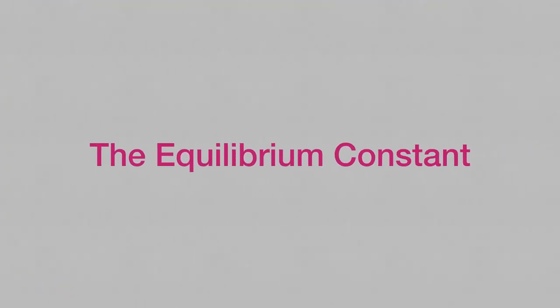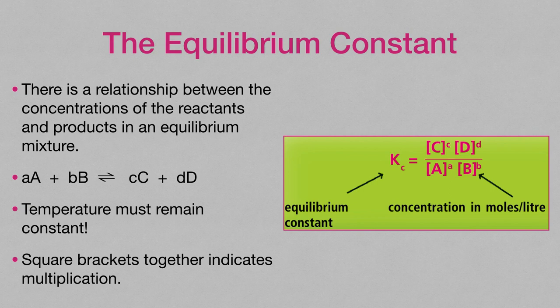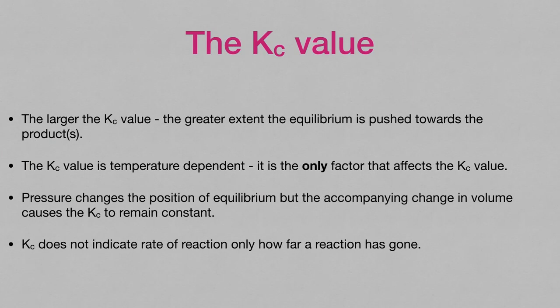The equilibrium constant. The equilibrium constant describes mathematically the relationship between the concentrations of the reactants and the products in the equilibrium mixture. The Kc looks more difficult than it is — pay attention to the formula and you do need to learn it. A large Kc value means the equilibrium will be closer to the product side, so chemists in industry usually want a large equilibrium constant. Temperature is the only factor that affects the Kc. The equilibrium constant doesn't indicate how fast or slow the reaction is, just how far the reaction has gone. Therefore, catalysts have no effect on the equilibrium constant value.